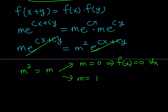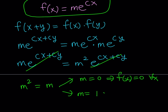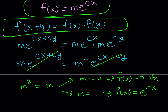If m equals 1, that's the better solution. From here we get f of x equals 1 times e to the power cx, which gives us the more general solution. In other words, if you have a functional equation of this form, then the exponential function is the solution, where c is a constant.